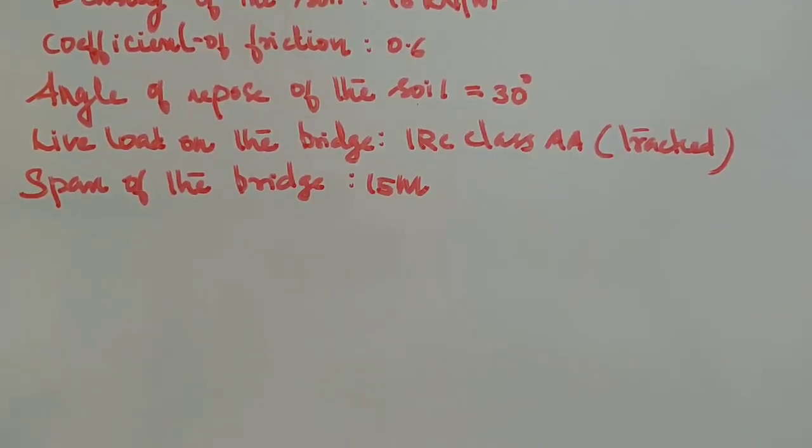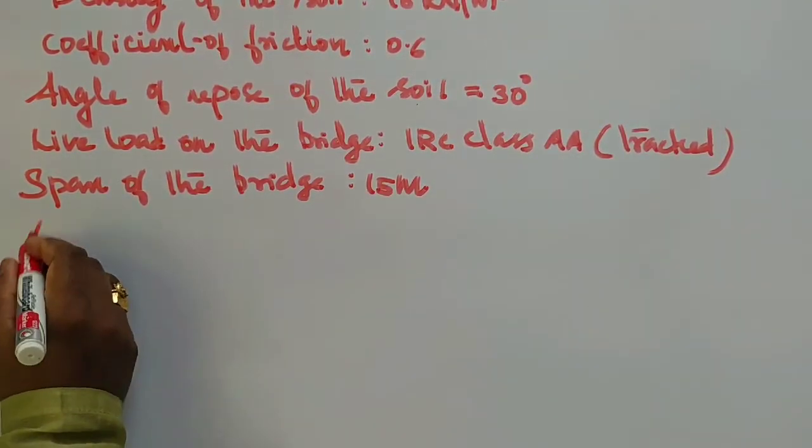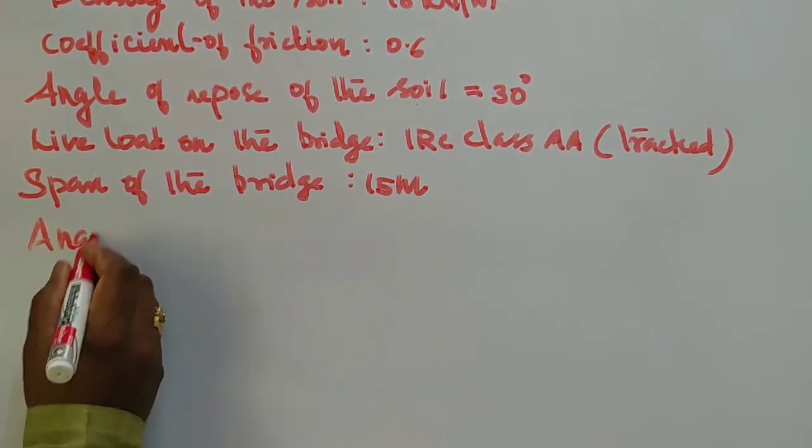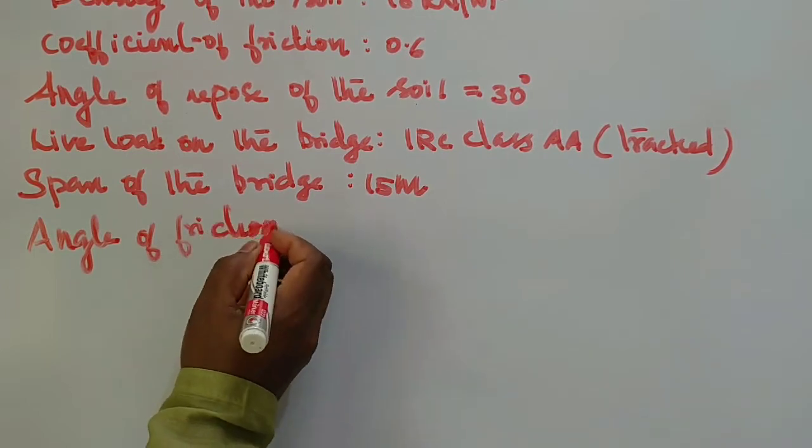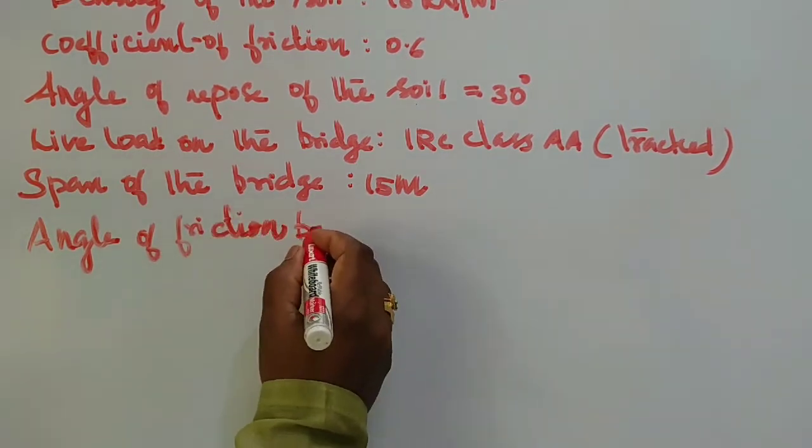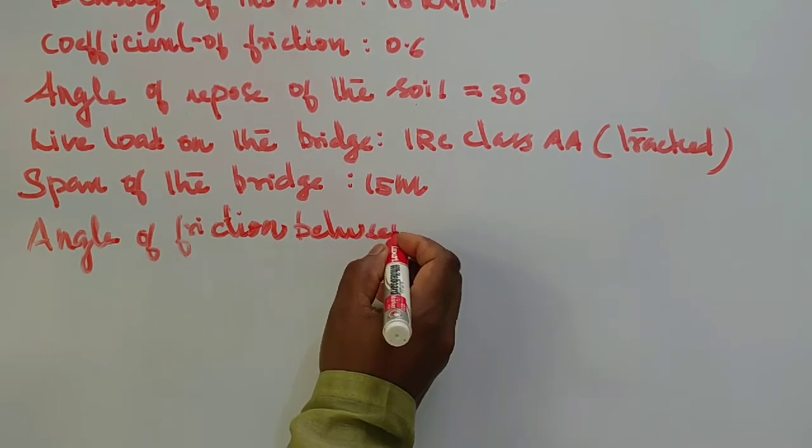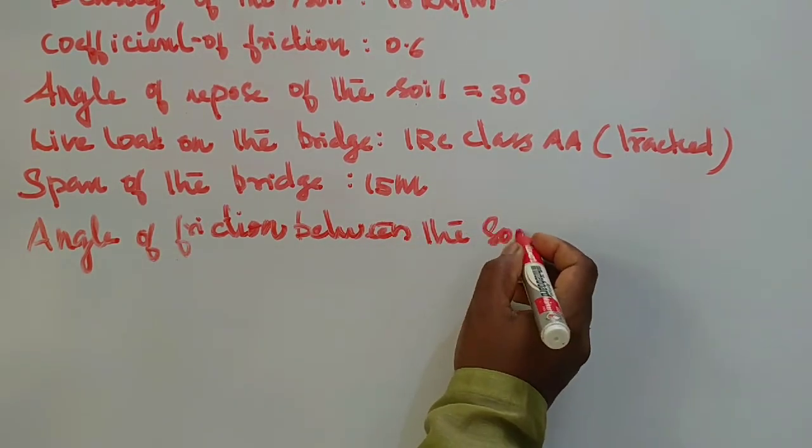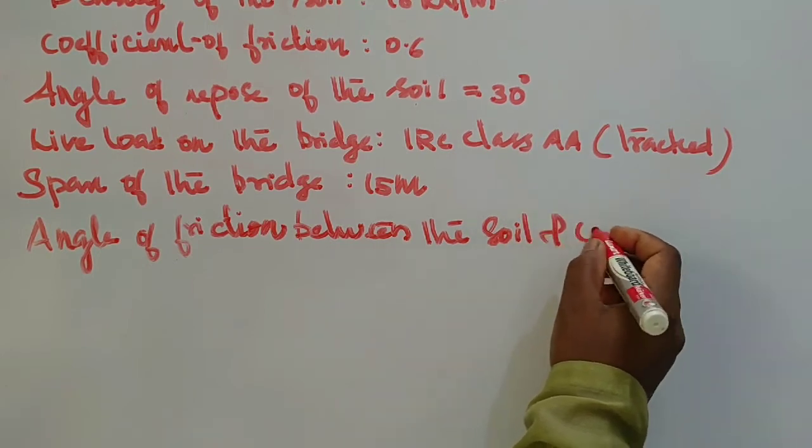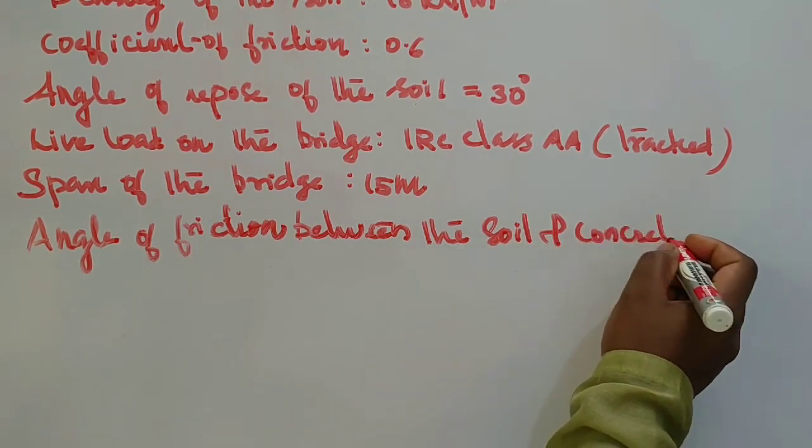Angle of friction between the soil and the concrete: 18 degrees.